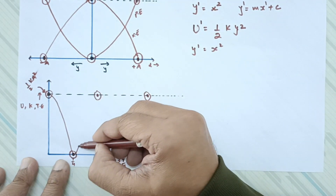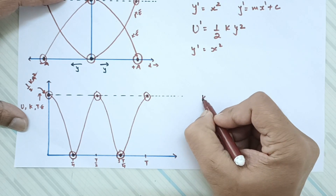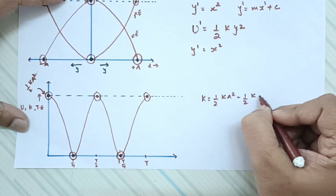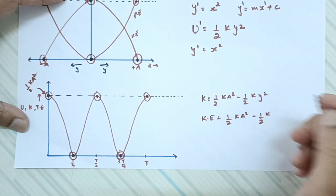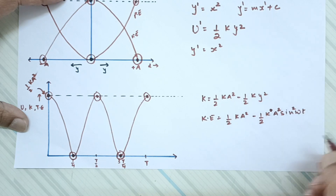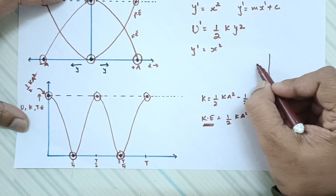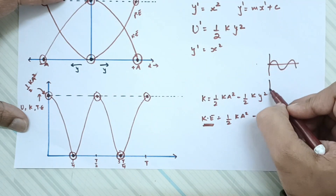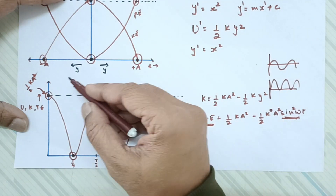The nature of the kinetic energy graph versus time is curved because kinetic energy equals half k a square minus half k a square sin squared omega t, which is a sin-squared function. If the sin graph has half up and half down, squaring it makes the negative part go up too. So the graph is always above the x-axis and curved — it can never be a straight line.